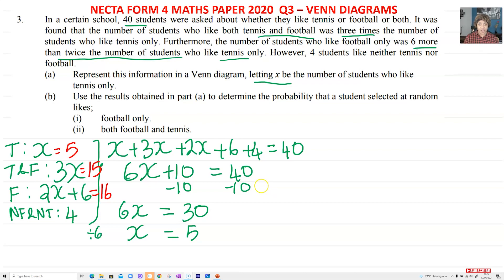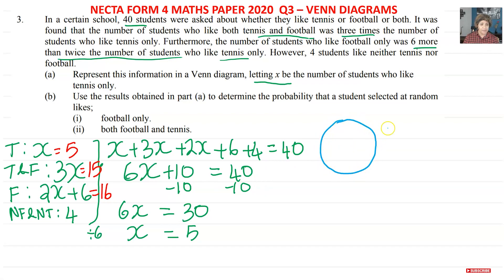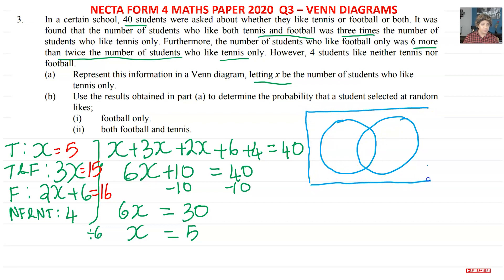Now let's draw our Venn diagram. We need two circles because there are two sports. I'll draw my first circle, then my next circle — and remember, you need the rectangle as well. One circle is for tennis and the other is for football. All together inside the rectangle we must have a total of 40 students. The 4 students who don't like either sport go outside the circles.